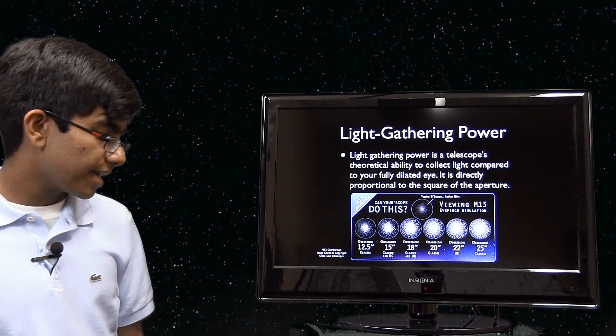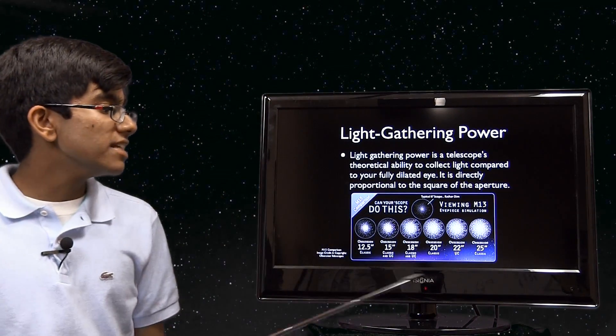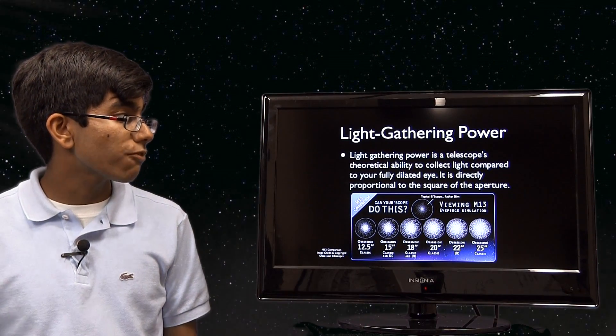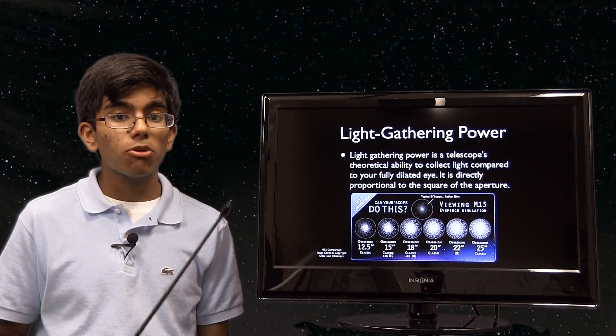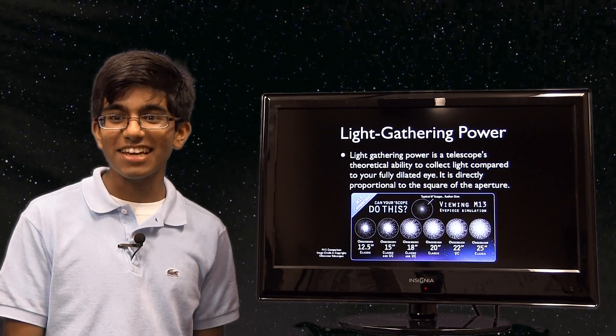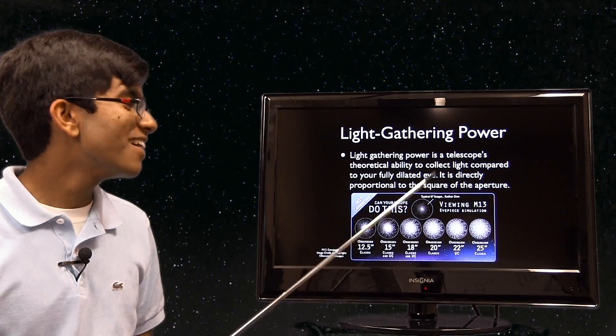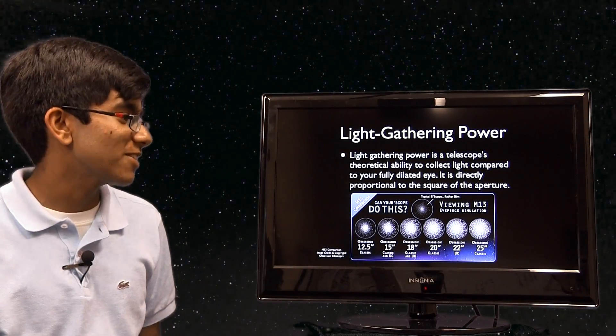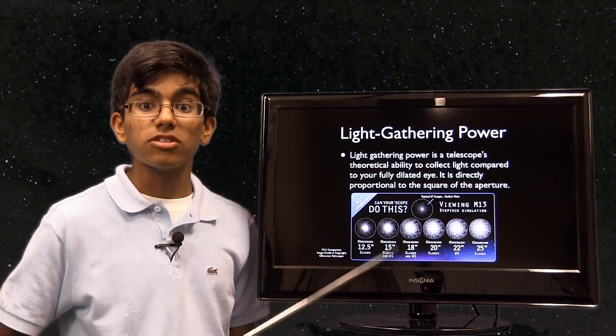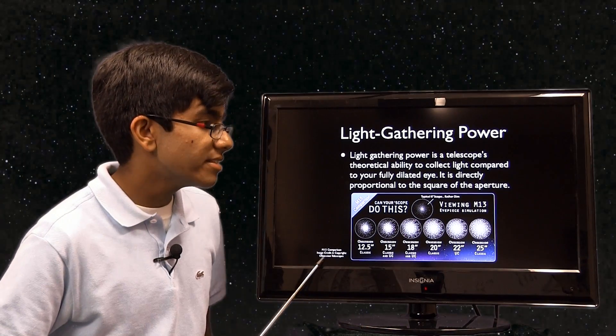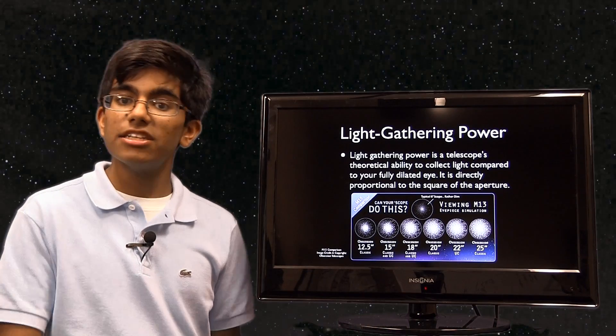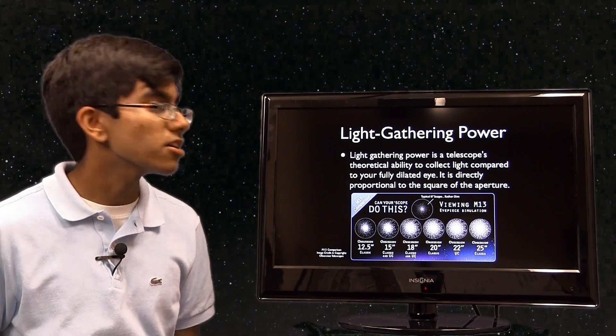Let's talk about light gathering power before we specifically talk about telescopes. What is light gathering power? It's the telescope's theoretical ability to collect light compared to your fully dilated eye, and it is directly proportional to the square of the area. Let's look at a typical 8 inch telescope—8 inch of aperture. Aperture is the diameter or the light gathering power.